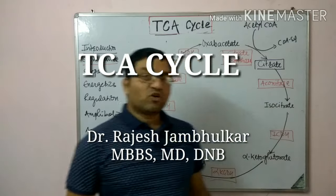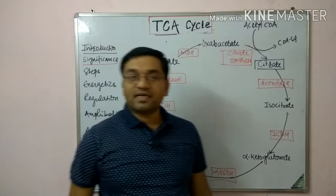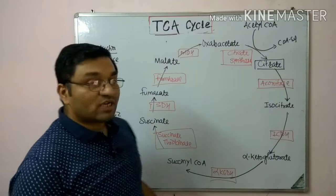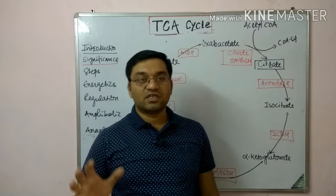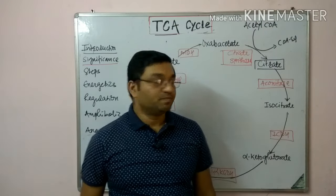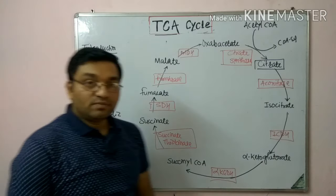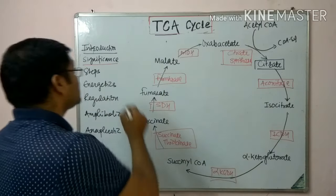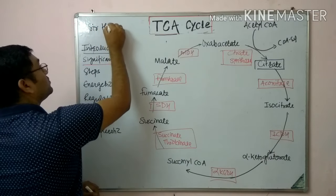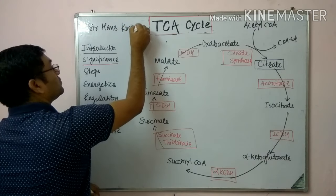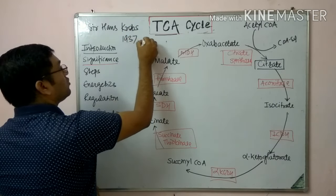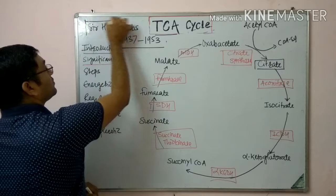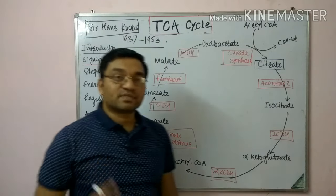Hello friends, today's topic of discussion is the tricarboxylic acid cycle. It is a very important question for university examination — a long answer question frequently asked in university or college examinations. This cycle was completely described by Sir Hans Krebs in 1937, and he got the Nobel Prize in 1953. That's why another name of this cycle is the Krebs cycle.